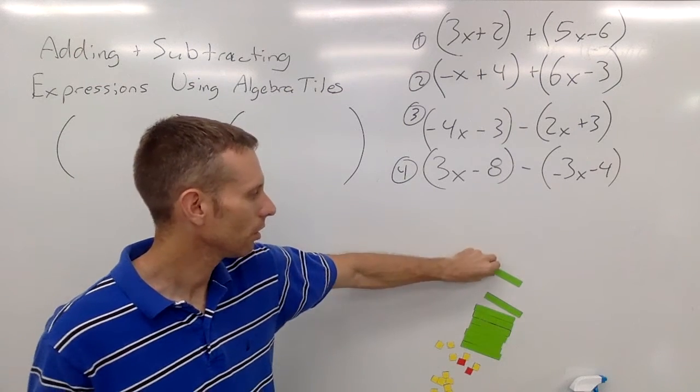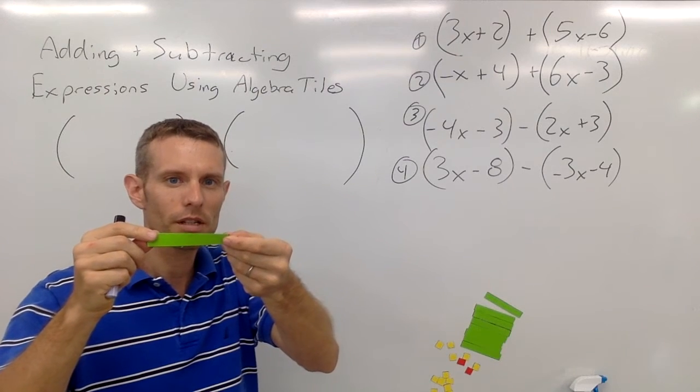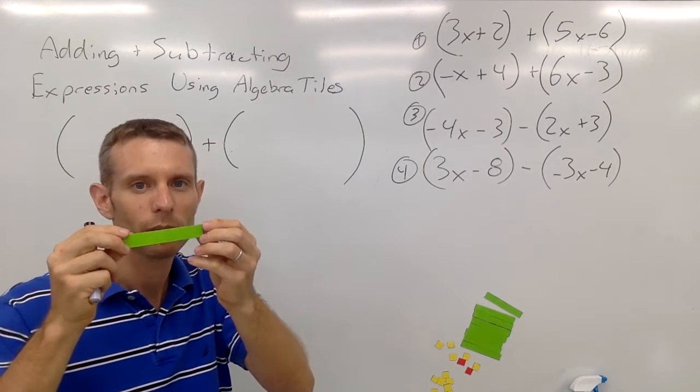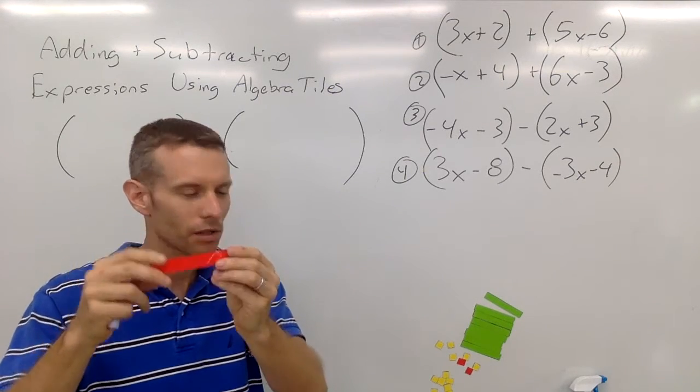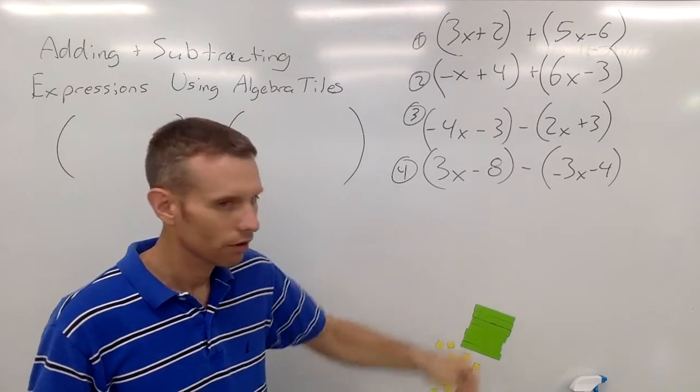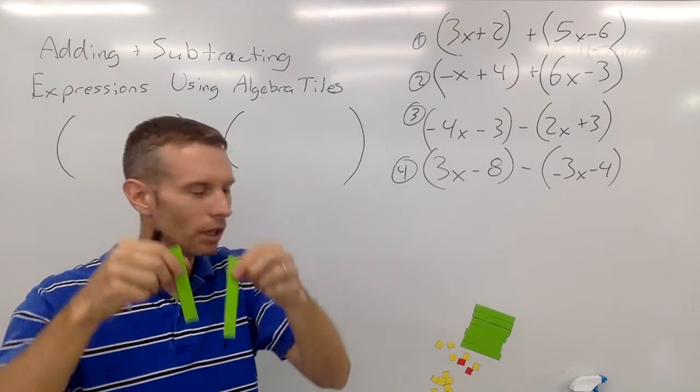If you recall, when you're using algebra tiles, the green side is a positive, in this case the rectangle is a positive x, and the red side is a negative x value. So if I have two greens showing, that's a positive 2x, right?